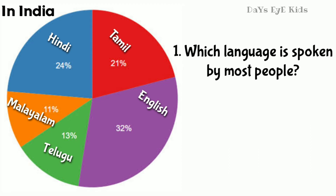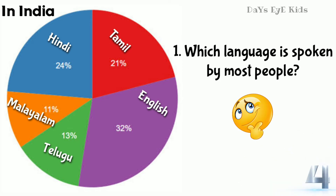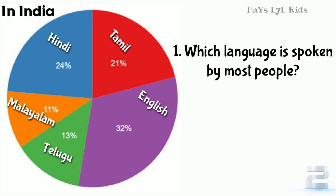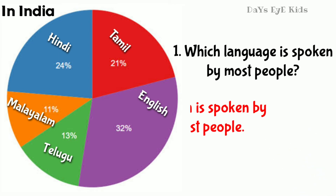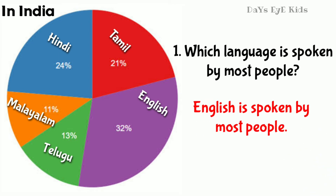Which language is spoken by most people? English is spoken by most people.